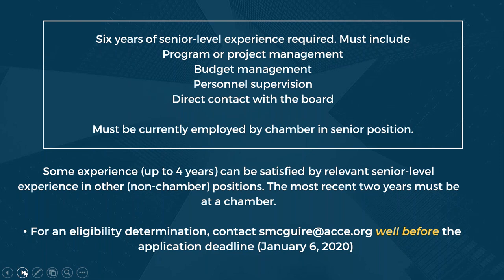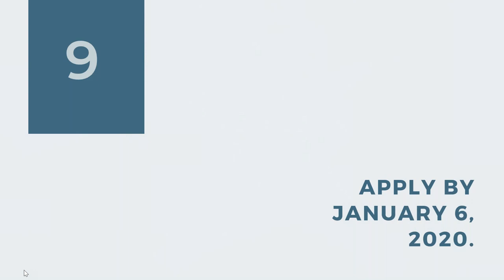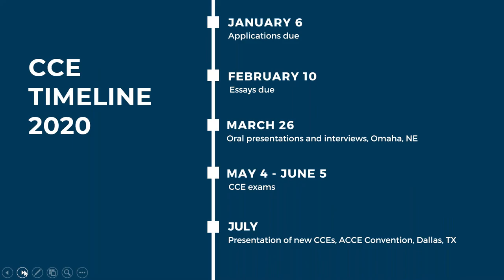The application date is January 6, 2020. Applications and supporting materials are due on the sixth; essays are due in February; oral presentations and interviews will be in Omaha around March 26th in conjunction with the board meeting. The CCE exam can be taken anytime between May 4th and June 5th, and CCEs are presented at the convention in July.